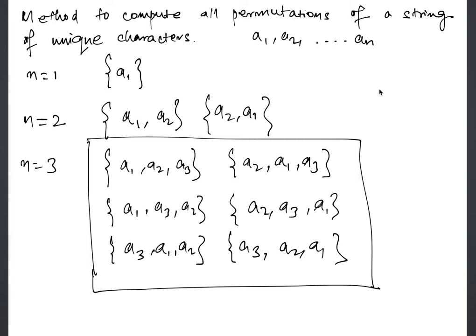So moving on, how to write the code for this? Say we have a method public List<String> perms and our string. If the string is null, we of course cannot have any permutations, so we return null.